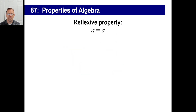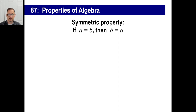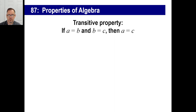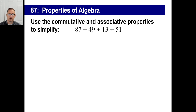The reflexive property: A equals A — you will not be surprised to learn. We'll talk more about that later. The symmetric property: if A equals B, then B equals A — enough said. The transitive property: if A is the same thing as B, and B is the same thing as C, then A is the same thing as C. That's the transitive property.